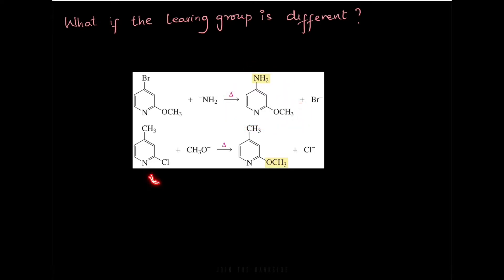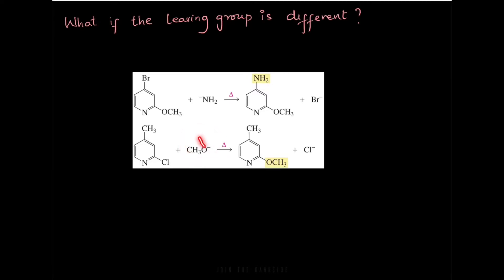In this example, CH3 is a bad leaving group, but Cl can take its lone pair of electrons and leave. So when the methoxide ion comes in, it will actually replace the chlorine and not do anything with the methyl group.